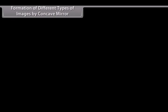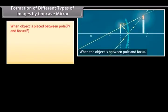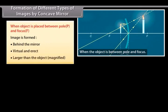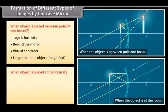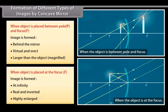Formation of different types of images by concave mirror. When the object is placed between pole P and focus F, the image is formed behind the mirror — it is virtual and erect, and larger than the object (magnified). When the object is placed at the focus F, the image is formed at infinity — it is real and inverted, and highly enlarged.